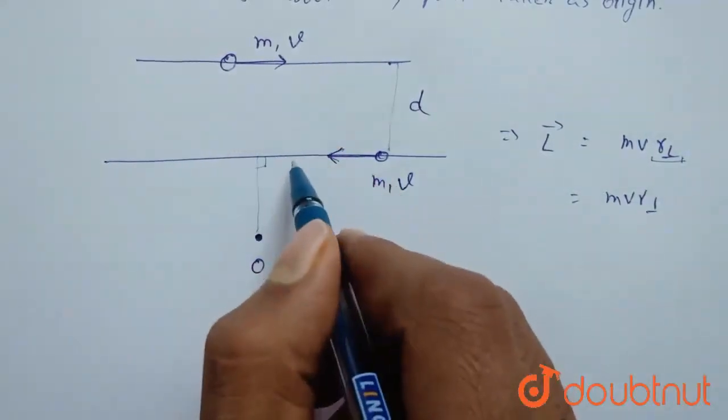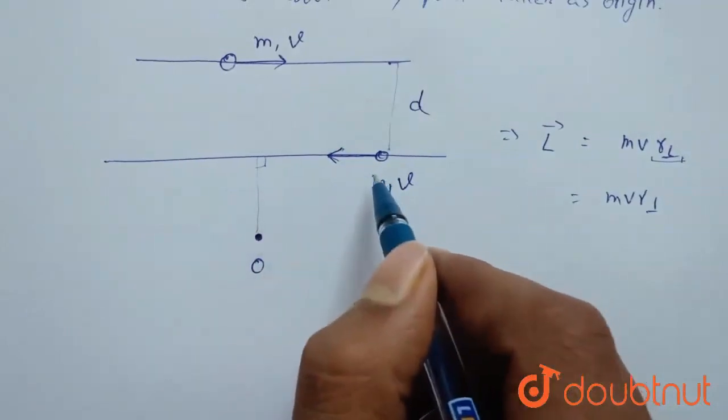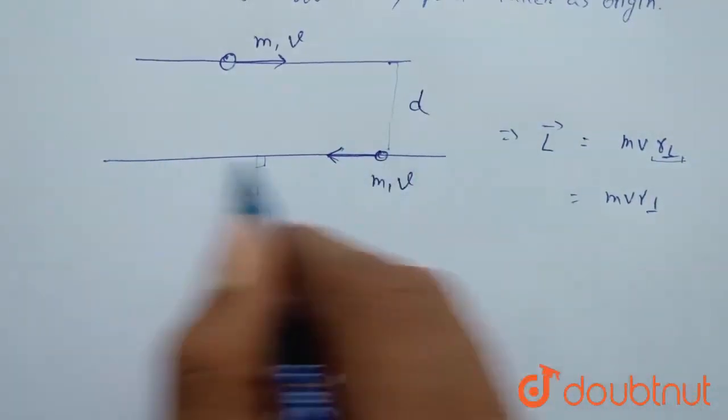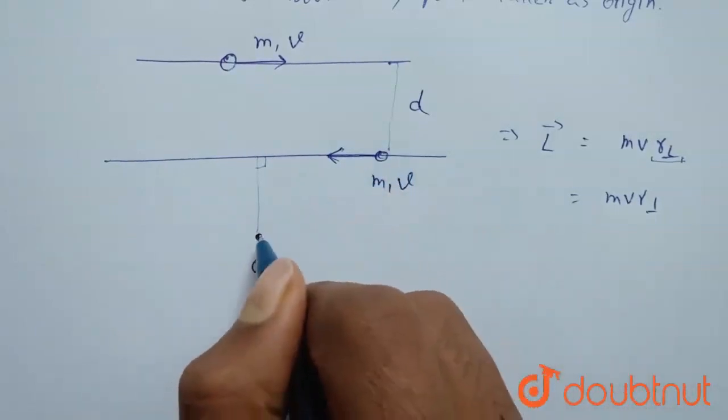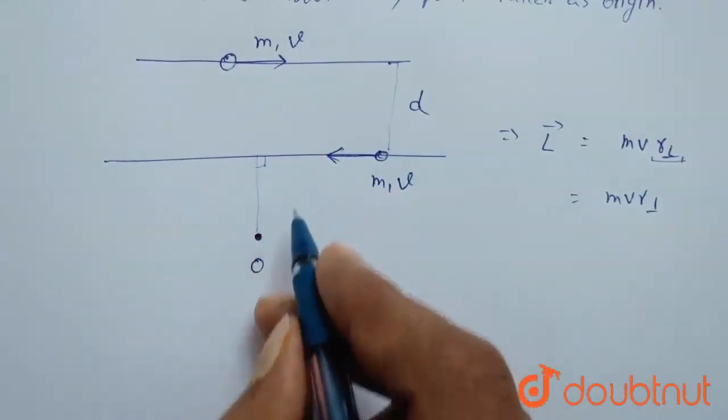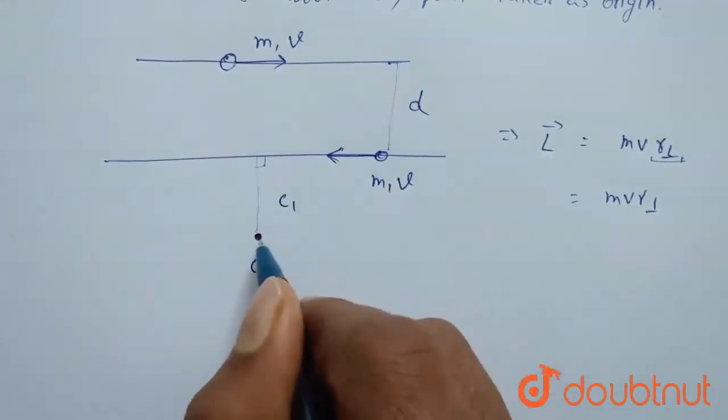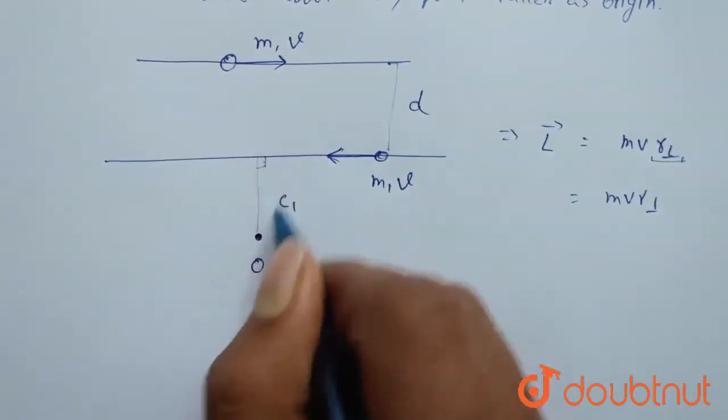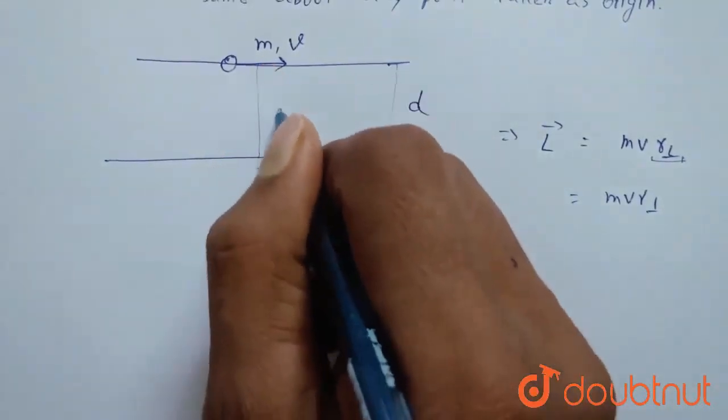If both the particles are moving in same direction, that is their direction is not changing, the line of movement, that is distance between O and line of movement will be constant. Let's say c1 is distance between O and this line and c2 is distance between O and this line.